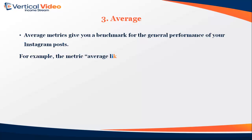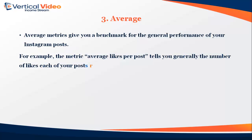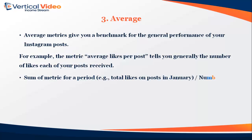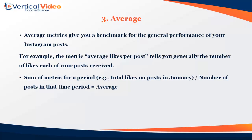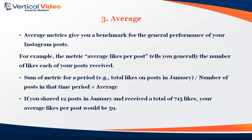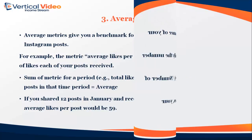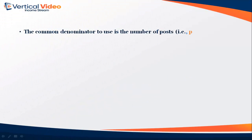For example, the metric 'average likes per post' tells you generally the number of likes each of your posts received. Formula: Sum of Metric for a Period (e.g., total likes on posts in January) ÷ Number of Posts in that Time Period = Average. If you shared 12 posts in January and received a total of 715 likes, your average likes per post would be 59.